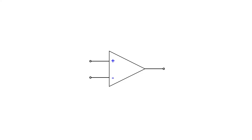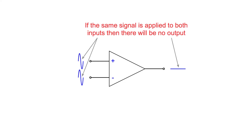As mentioned earlier, the op-amp has differential inputs, and this means that if the same input is applied to both inputs, then the output should not change. This feature is known as the common mode rejection ratio.